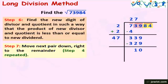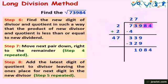Again we move the next pair down to the right of the remainder. The pair, also called a period, is 84. So we bring down 84, and the new dividend is 1084. To find the new divisor, we add the latest quotient digit 7 to the divisor 47: 47 + 7 = 54. We write 54 and leave the ones place vacant.